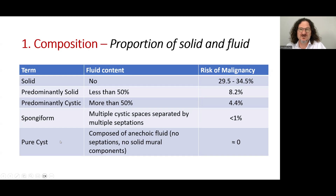The first descriptor is composition, which defines the proportion of solid and fluid content of the nodules. The nodules may be solid, predominantly solid with less than 50% fluid content, predominantly cystic with more than 50% fluid content, or may be spongiform — defined as multiple cystic spaces separated by multiple septations — or they may be pure cysts.